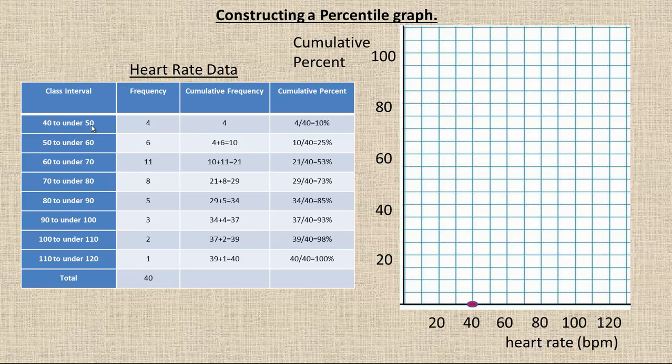So, the beginning here, there's nobody under 40, so that's why we'd start that one right at 0. And then, the beginning of the second category or the end of the first one is the 10%. So, at 50, I would put the 10%. And then, at 60, I would put the 25. And then, at 70, we would put the 53%. So, that's 53, a little bit below the 55. And then, 73% next, and then the 85, and the 93, and the 98. And then, above the end of the last category, above the 120, we put 100%. And so, we draw a curve through them. So, that's a percentile graph.